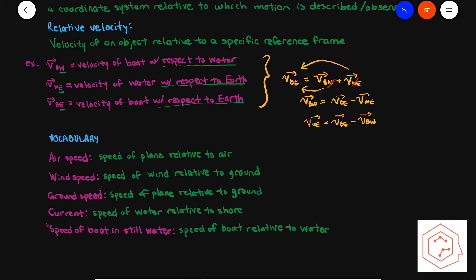Here is a quick list of useful vocabulary for word problems. Airspeed is the speed of the plane relative to the air, represented by V_pa. Wind speed is the speed of the wind relative to the ground, V_we, as ground is synonymous with earth. Ground speed is the speed of the plane relative to the ground, V_pe. A current refers to the speed of the water relative to the shore, V_we. Speed of the boat in still water means the speed of the boat relative to the water, V_bw.